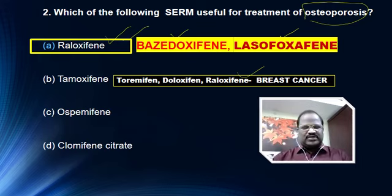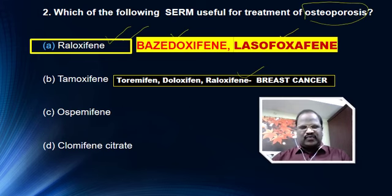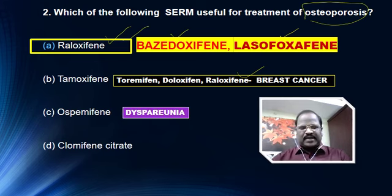Look at option C — ospemifene. This is a newer SERM useful for treatment of dyspareunia. Dyspareunia means painful coitus — dys means pain.